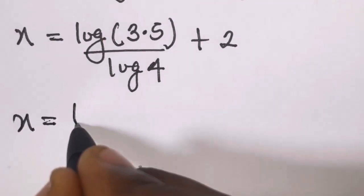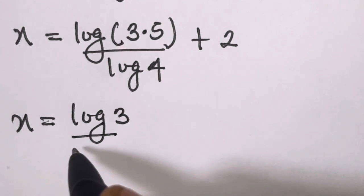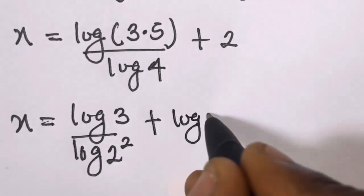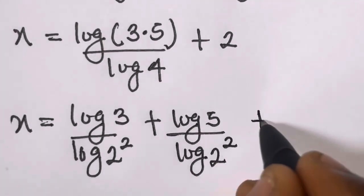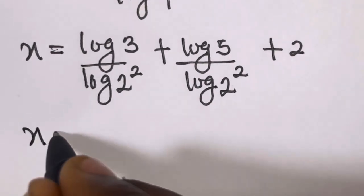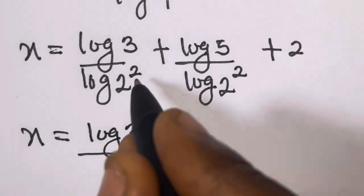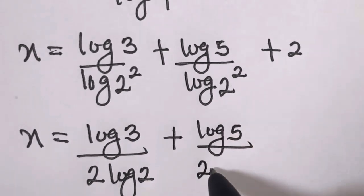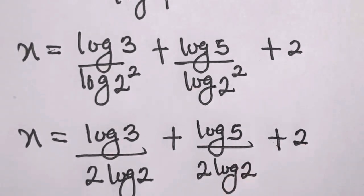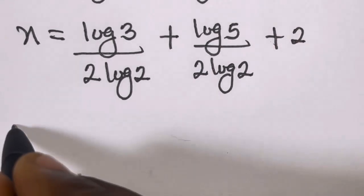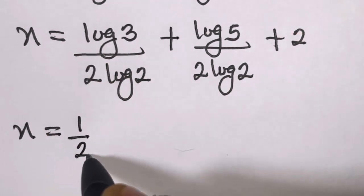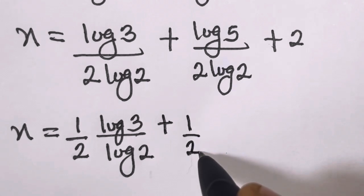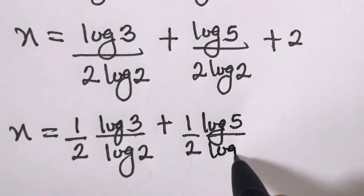Now for log 15 divided by log 4: since 15 is the product of 3 and 5, and 4 is 2 squared, we can write log 3 divided by log 2 squared plus log 5 divided by log 2 squared, then plus 2. Factoring out 1/2, we have 1/2 times log 3 divided by log 2, plus 1/2 times log 5 divided by log 2, plus 2.